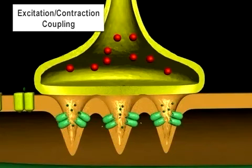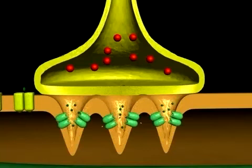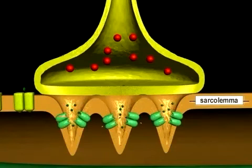The process of excitation-contraction coupling consists of all those processes involved between the time of generation of the action potential on the muscle sarcolemma and the actual contraction.